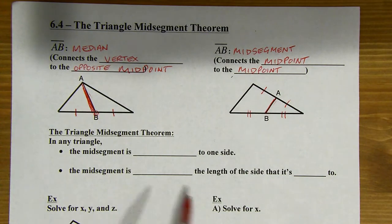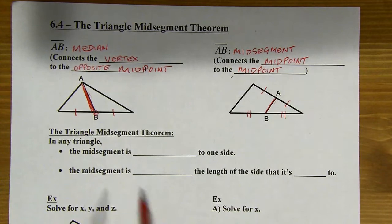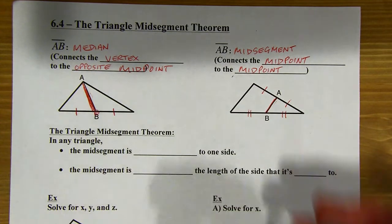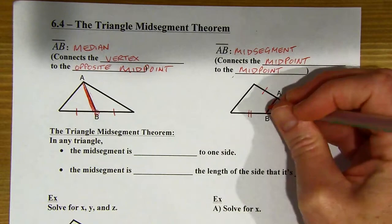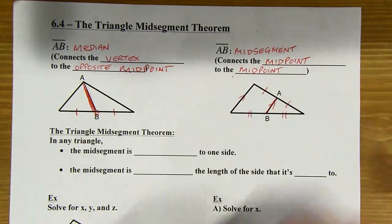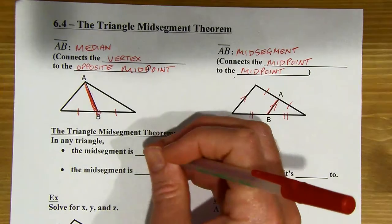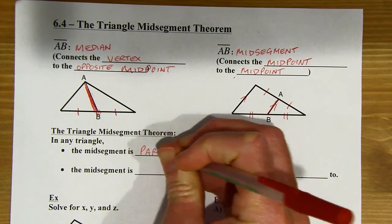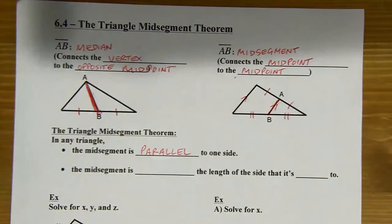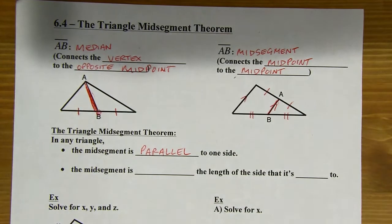The first thing you want to know about a mid-segment is that it is going to be parallel to one side. If I go back up to this diagram, that's going to be true — every time, it just always works out like that. So it's pretty obvious what side it's going to be parallel to.